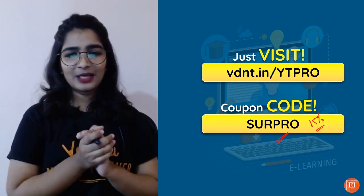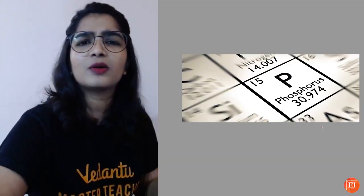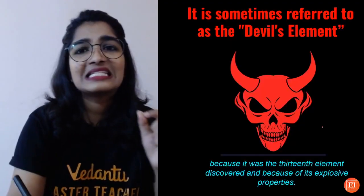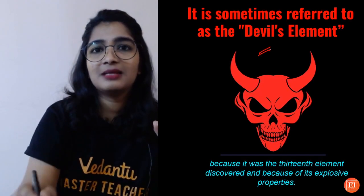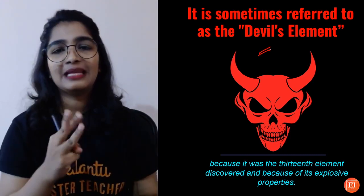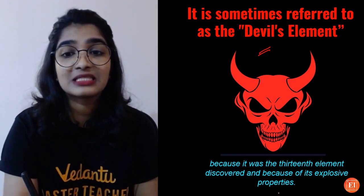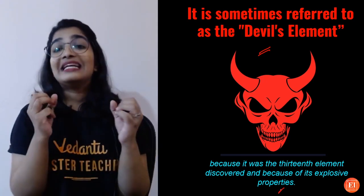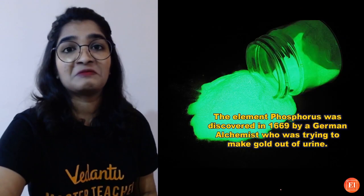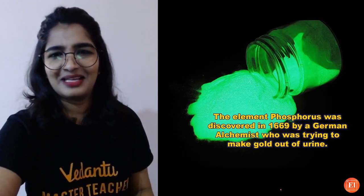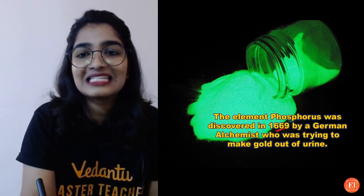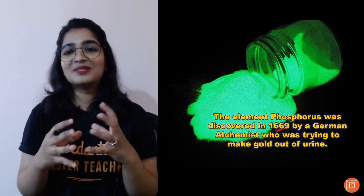Moving on — about phosphorus. Did you know it is sometimes referred to as the 'devil's element'? Because it was the 13th element to be discovered, and because of its explosive properties, it has been given that nickname. The element phosphorus was discovered in 1669 by a German alchemist.